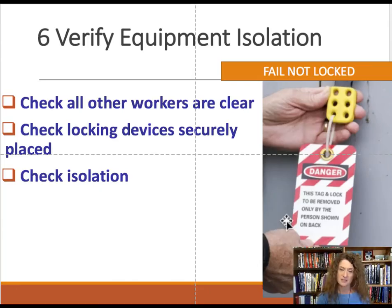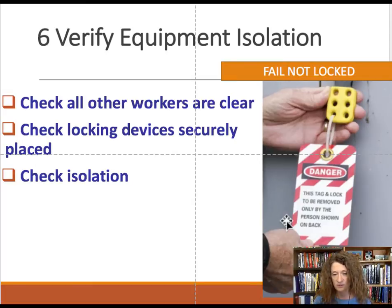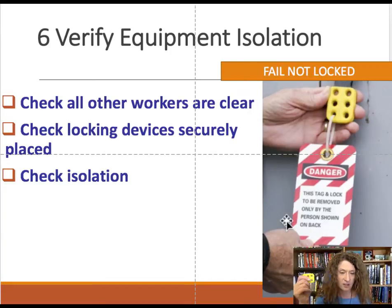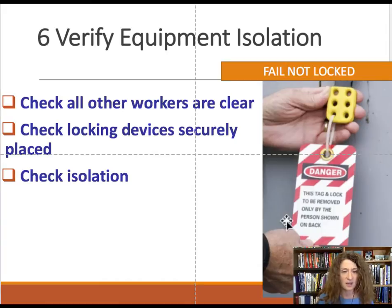Step 6, also sometimes forgotten, is to verify that the equipment has been isolated, that workers are out of the work area, and that all energy sources have been isolated. An example of improper lockout-tagout is placing a tag only on the hasp, which can be removed by anyone. You want someone to have to physically use a key to remove a lock — and that person should be the one entering the space whose life depends on the lockout-tagout system.